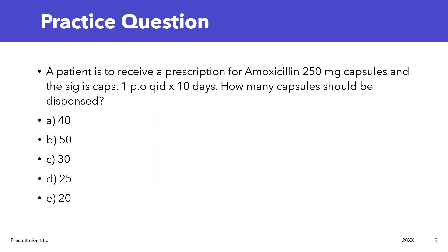A patient is to receive a prescription for amoxicillin 250 milligram capsules and the sig is caps 1 PO QID for 10 days. How many capsules should be dispensed? A: 40. B: 50. C: 30. D: 25. E: 20. Try to see if you can solve this problem and write your answer in the comments below, but we'll go through it together.